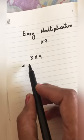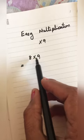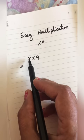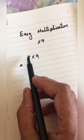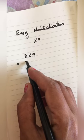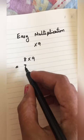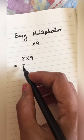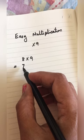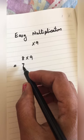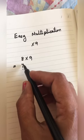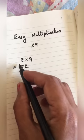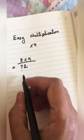While multiplying 8 with 9, first we have to write the previous number of 8, that is 7. For the second digit, we have to subtract from 9 — how many numbers are needed to make 9? That is 2. So the answer is 72.